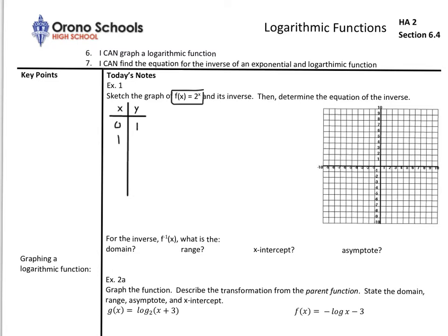Let's plug in 1. 2 to the 1st power is 2. Let's plug in 2. 2 squared is 4. If I plug in 3, 2 cubed is 8. But if I plug in 4, 2 to the 4th is 16. And that goes off our graph.